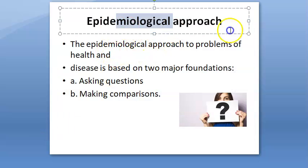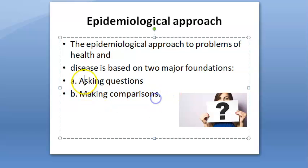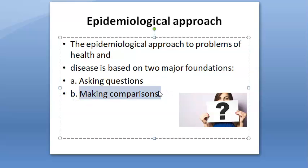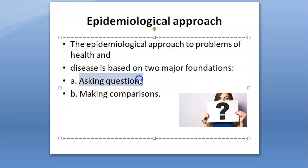The epidemiological approach is to ask questions and make comparisons. You ask: What is the event? What is the magnitude of the problem? Where did it happen? When did it happen? Who are the people affected? Why did it happen? And further: What can be done to reduce the problem? How can you prevent it in future? What action should be taken by the community? What resources are required?